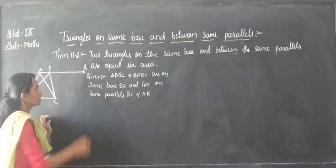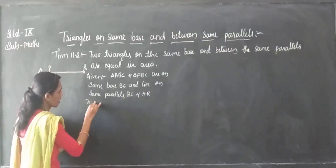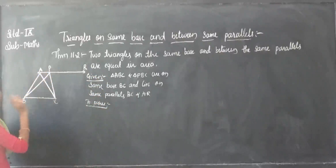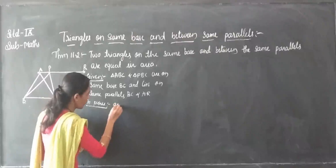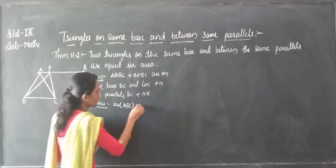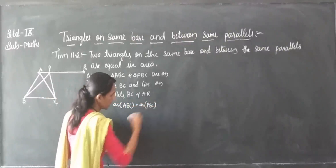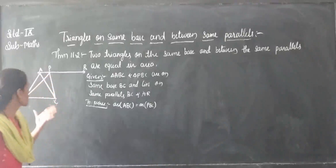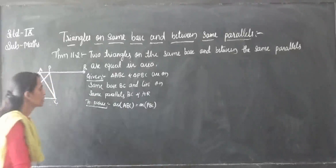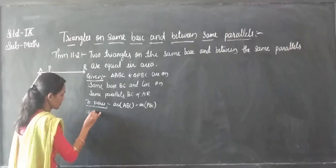So, the area of triangle ABC is equal to the area of triangle PBC. That is what we want to prove. So for that, you have to use the parallelism theorem. For that, you have to do a construction. What is the construction? If ABC is a triangle, we have to draw a line parallel to it.